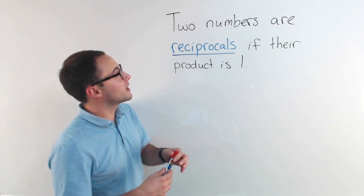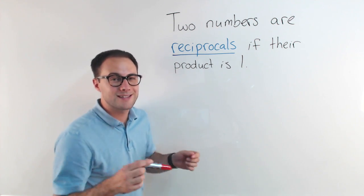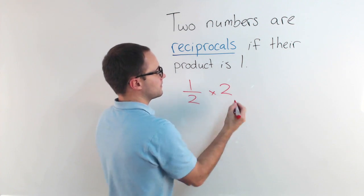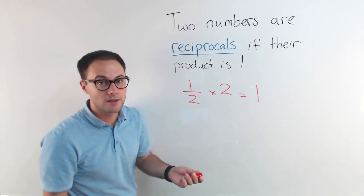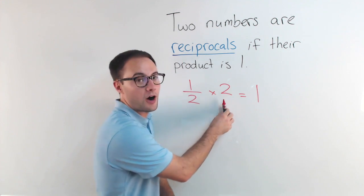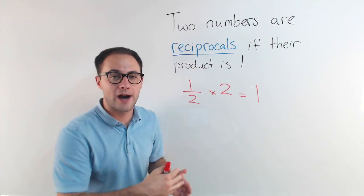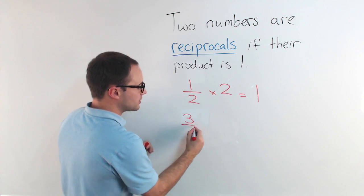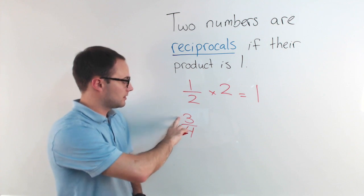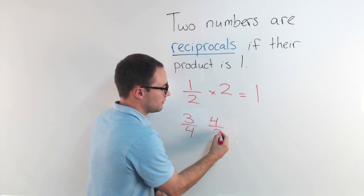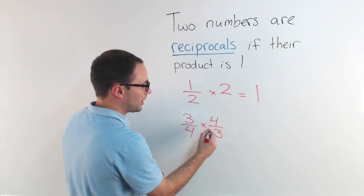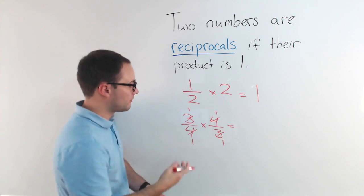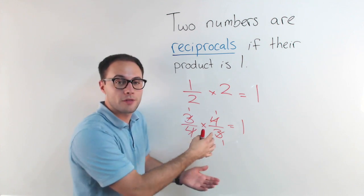Let's talk about reciprocals. Two numbers are reciprocals if their product is one. For example, one-half times two — you know that's just one, which means one-half and two are reciprocals. One way to find a number's reciprocal is to just flip it. So if you're wondering what's the reciprocal of three-fourths, you just flip it over and that would be four over three. We could check by multiplying — four and four, three and three would all simplify, and you would get one. So three-fourths and four-thirds are reciprocals.